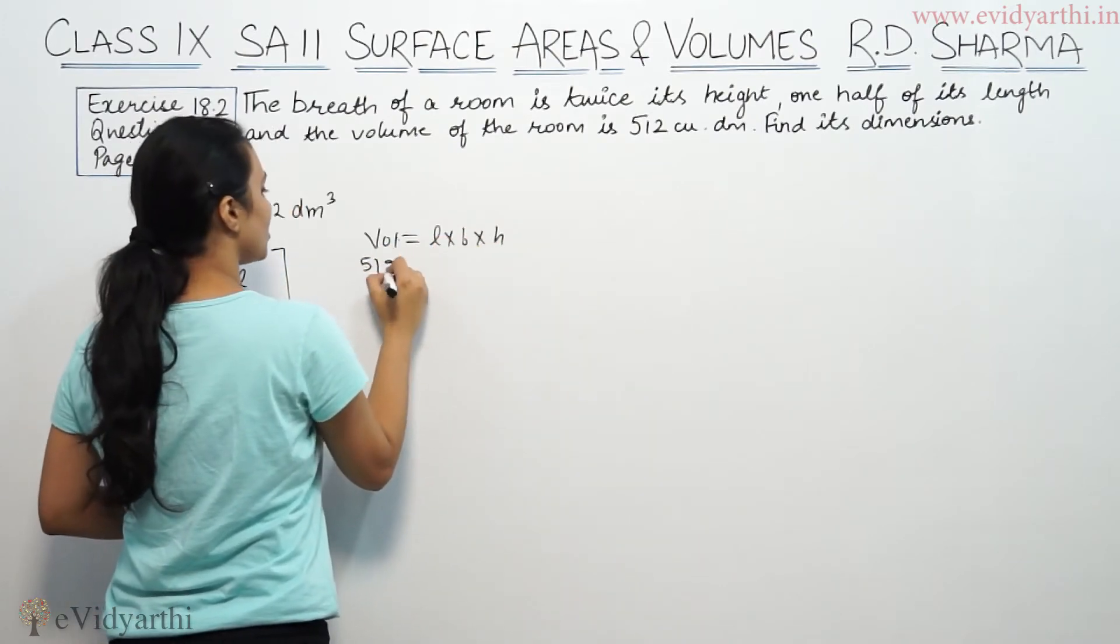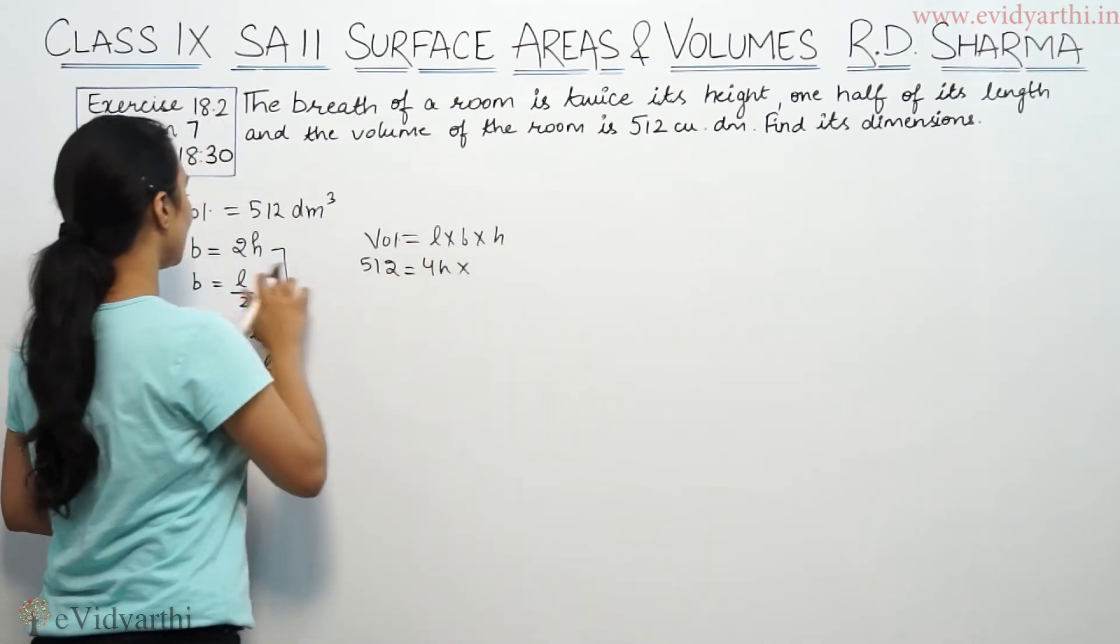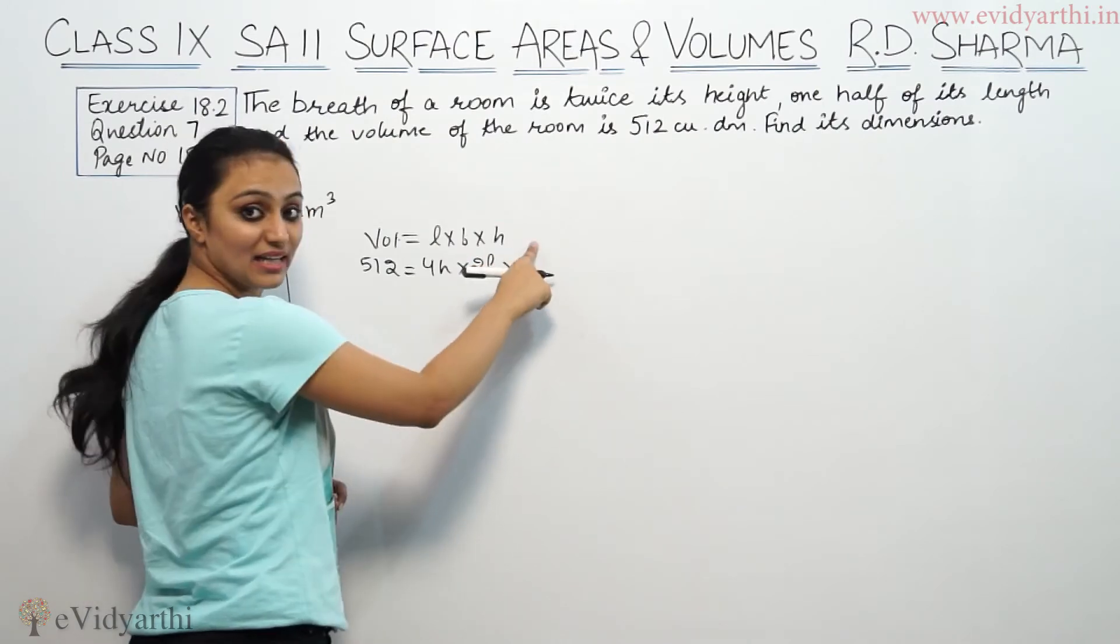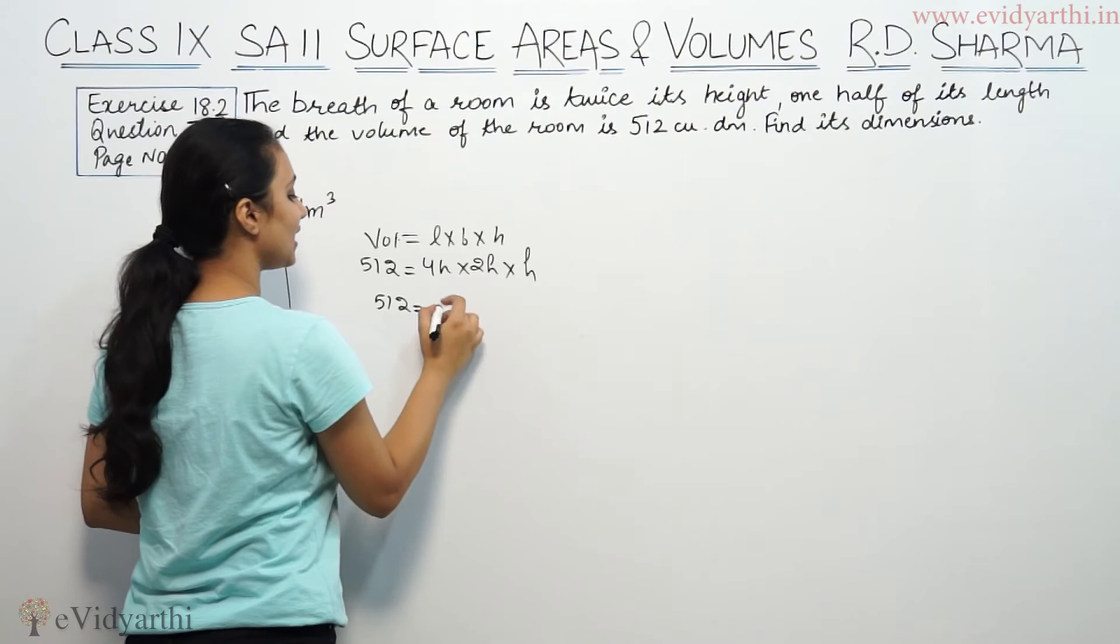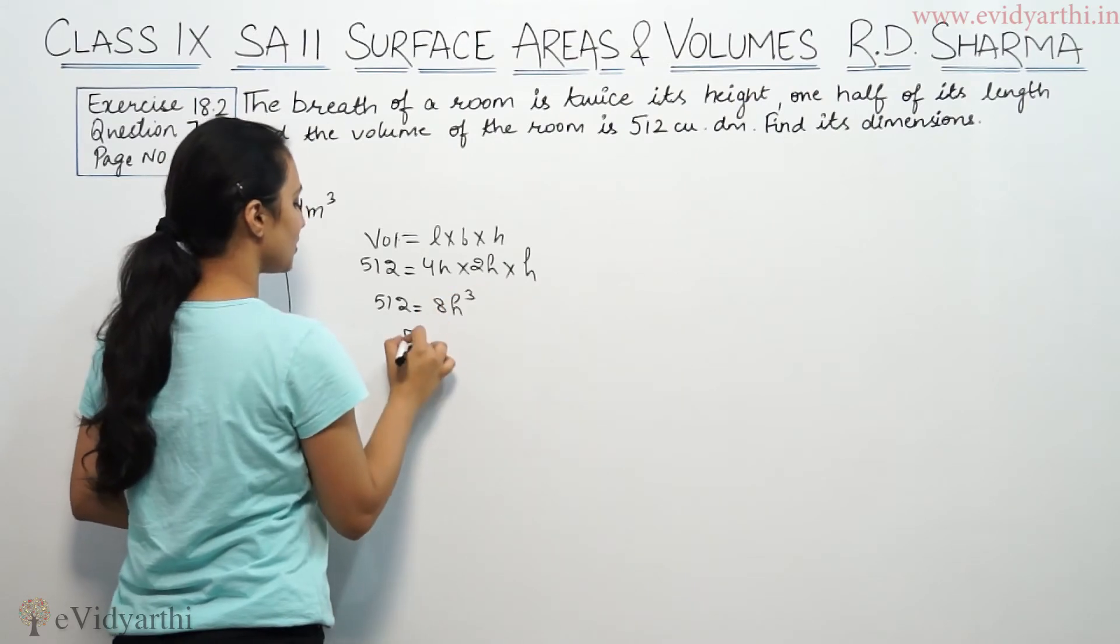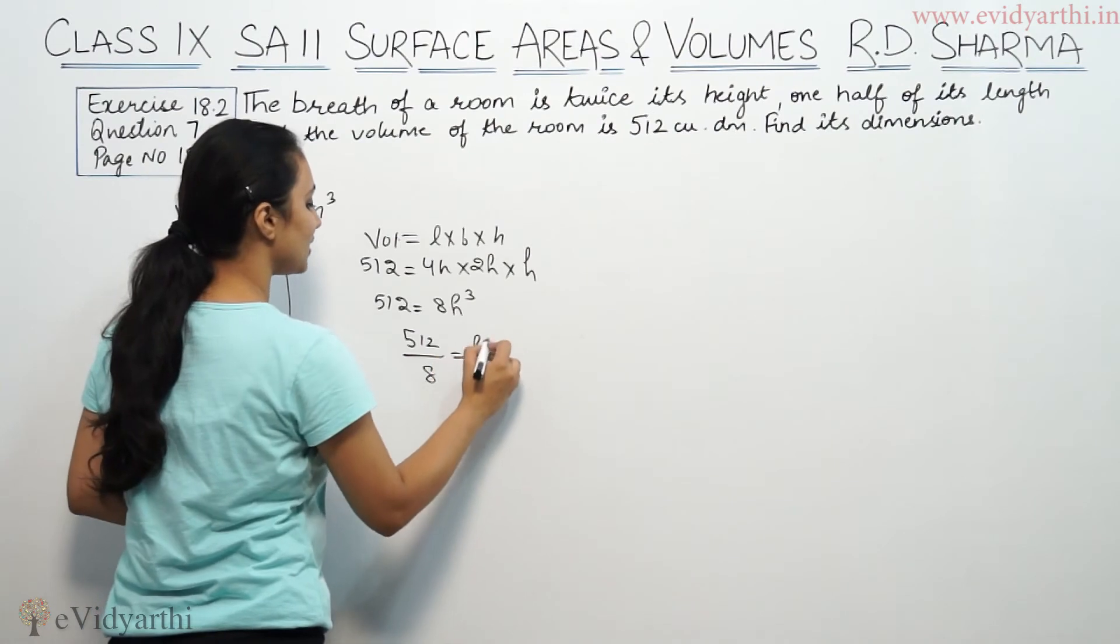So volume is 512. Length is 4h, breadth is 2h, and height is h. So 512 equals 8h cube. So 512 divided by 8 equals h cube.